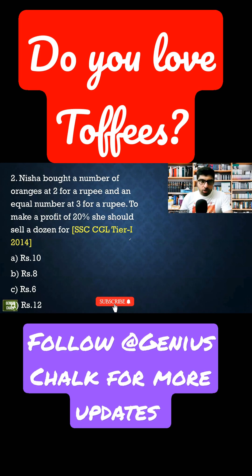Nisha bought a number of oranges at two for a rupee and an equal number at three for a rupee. To make a profit of 20 percent, she should sell a dozen for how much? Let's take the LCM of two and three.